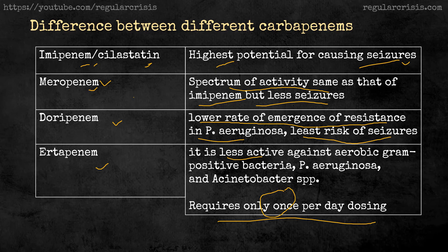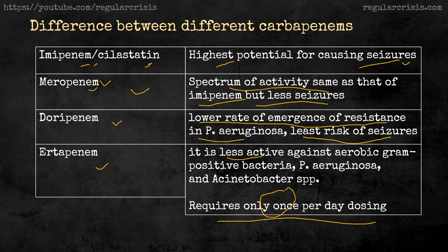To summarize: imipenem has the highest risk of seizures; meropenem has the same activity but less seizure risk; doripenem is slightly more potent against Pseudomonas aeruginosa but is not a good empirical choice; and ertapenem has a narrower spectrum but convenient once-daily dosing. Combining all these factors, meropenem is the drug of choice as an empirical antibiotic and is used most widely in emergency units and intensive care units.